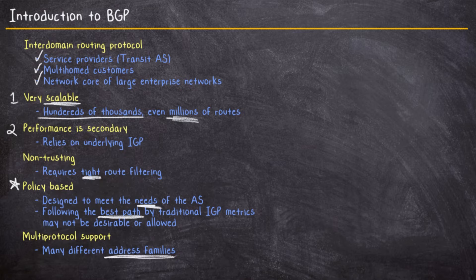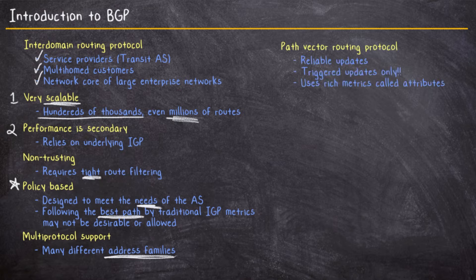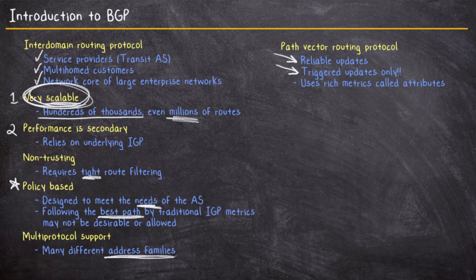In your studies of routing protocols, you've heard the term distance vector many times in relation to things like RIP and EIGRP, which at its heart is a distance vector routing protocol. Well, BGP we call a path vector routing protocol. As part of being a path vector routing protocol, this does use reliable updates, but those updates are only triggered — in other words, it doesn't periodically send updates like RIP would. RIP by default sends its entire routing table every 30 seconds, which wouldn't work well for scalability. It wouldn't work out to send a million routes every 30 seconds. So we only send those updates when something actually changes, hence the triggered updates.